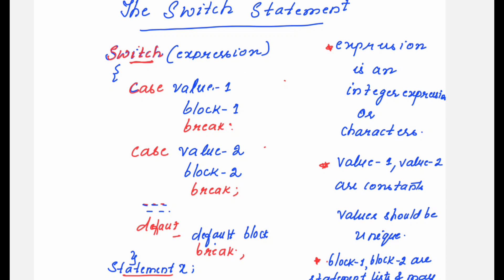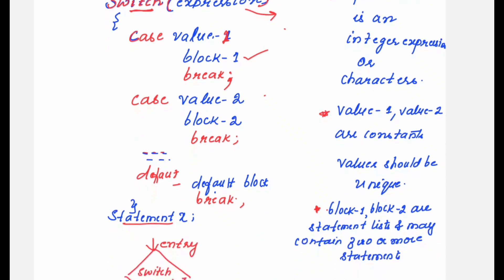The syntax of the switch statement uses the keyword switch followed by an expression. The expression gets evaluated to a value, and that value is compared with the values mentioned against each of the cases. We write switch followed by the variable or expression in brackets, then case with value 1. If the expression value matches value 1, the block of statements in that case will get executed, followed by a break statement which exits the case and passes control to statement x.